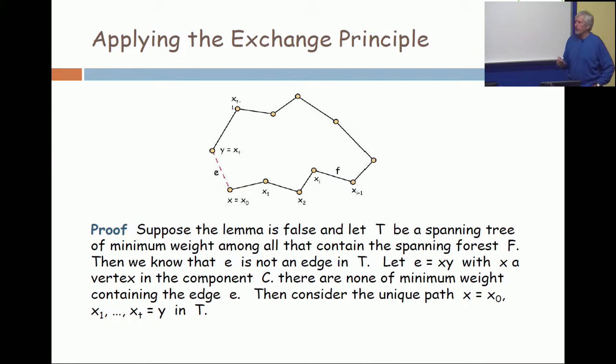The point is that as you walk around this path, you must at least once be in C, and with the next one not in C. And so I'm suggesting that you have an edge F, and that edge F, the first endpoint of it is in C, and the last endpoint of it is not in C.